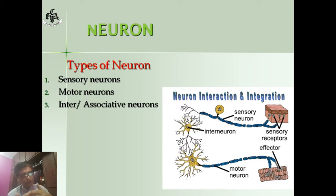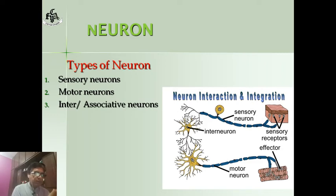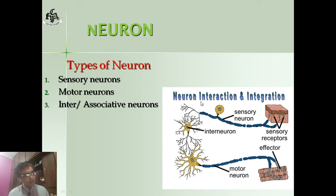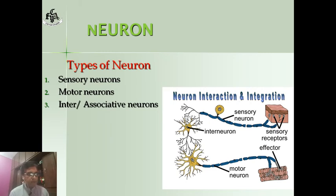The sensory neuron carries the nerve impulse and message from the receptor to the associative neuron. The associative neuron, also called the inter neuron, analyzes the message that is carried to the central nervous system — to the brain or spinal cord. After analysis, the order is given to the effector to respond.